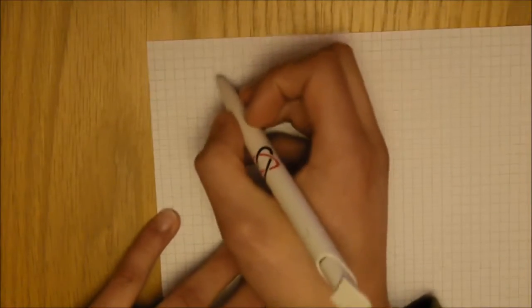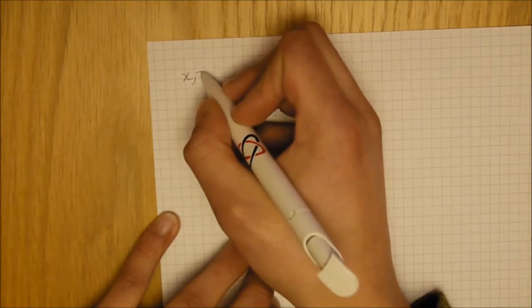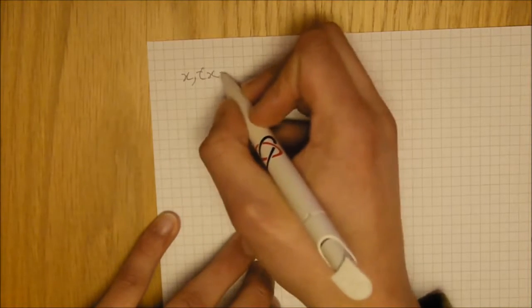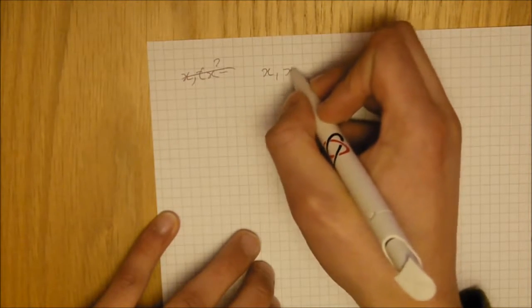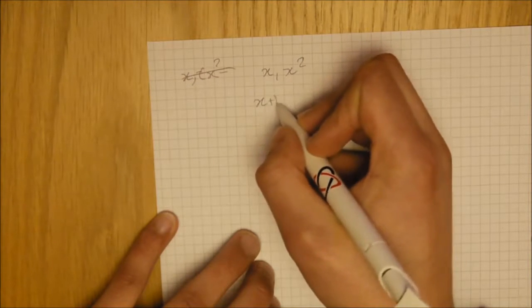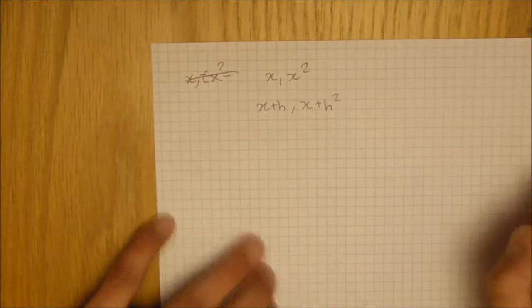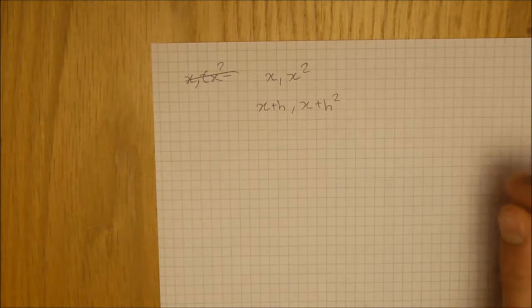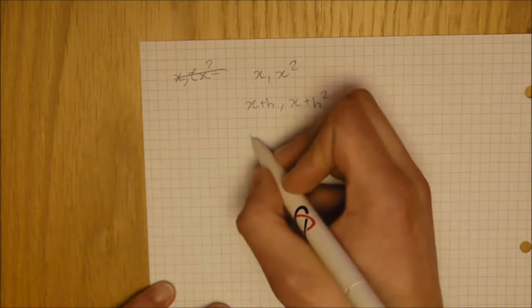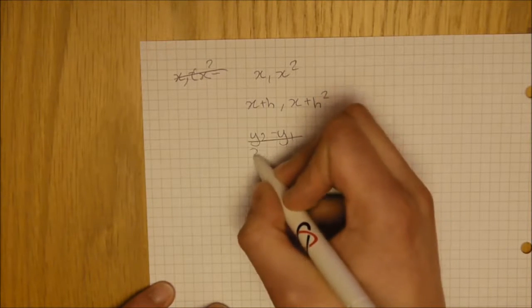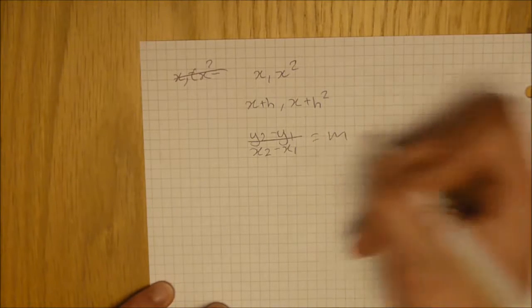So here we have one x-coordinate to x plus h. x-squared. x, x-squared. And then we have x plus h, x plus h-squared. Now, obviously, as we worked out the gradient previously, it's y2 minus y1 over x2 minus x1. So the same principle applies.